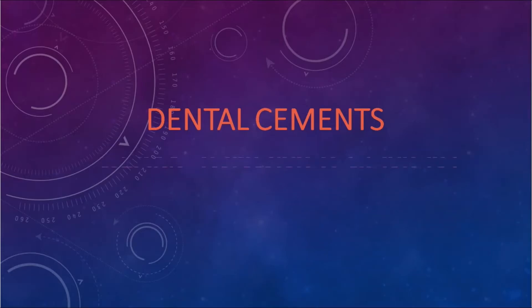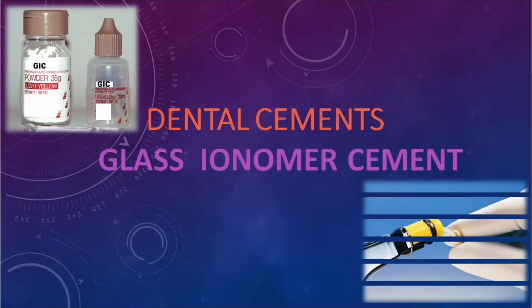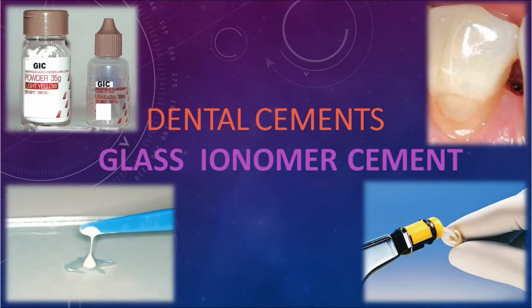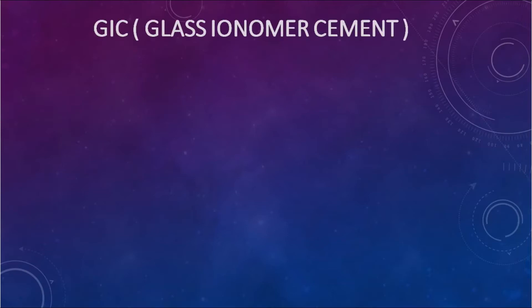Hi dentist, it's P-square. Dental cement — glass ionomer cement is important in practical as well as theory, as a high yielding 10-mark or 5-mark question comes from this in BDS dental materials second year exam. GIC — glass ionomer cement — is an adhesive, tooth-colored, anticariogenic (meaning it resists secondary caries) restorative material.